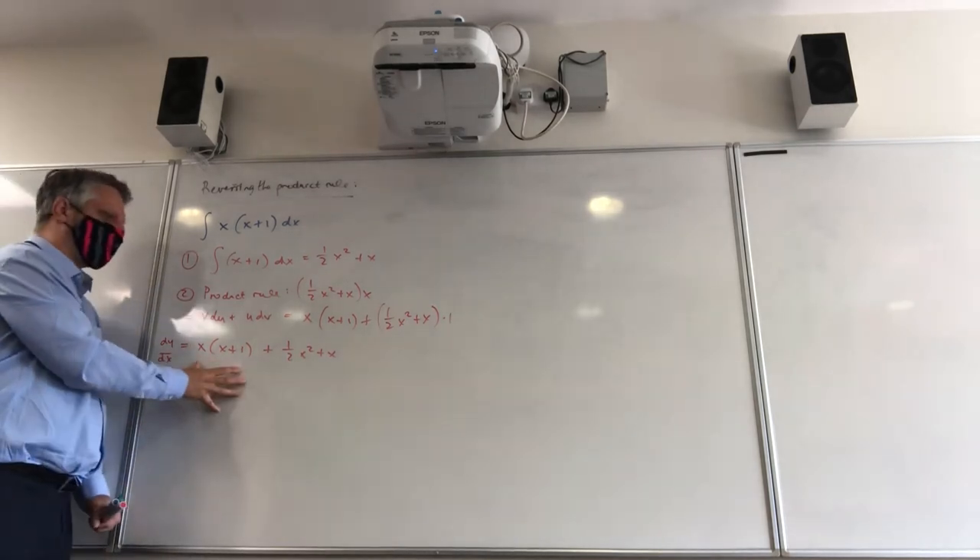So our dy dx is going to equal x times x plus one, plus a half x squared plus x, because it's just times one. Hopefully what you will notice here is that that is the question. That bit. But we've got an extra bit in the end that we're going to have to somehow get rid of. We've got part of the thing we're dealing with here, but we've also got an extra bit.